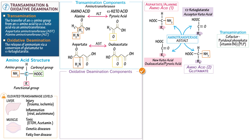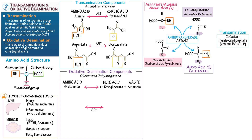Now let's move on to oxidative deamination and look at its chemical components. Here we're thinking about the amino acid glutamate and the alpha-keto acid alpha-ketoglutarate, and the waste byproduct ammonia. The enzyme glutamate dehydrogenase, GDH, is responsible for the oxidative deamination reaction. Show glutamate in its glutamic acid state — 5 carbons, 4 oxygens, 1 nitrogen, and 9 hydrogens. It's protonated; we show the protonated state for simplicity.